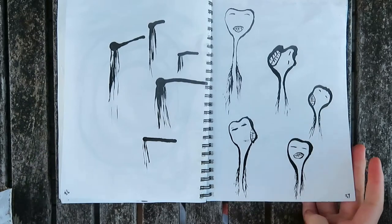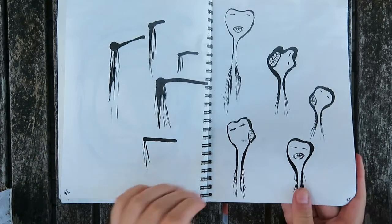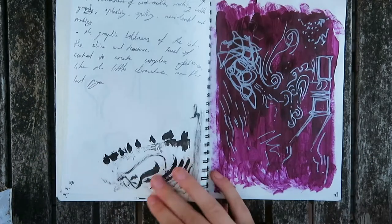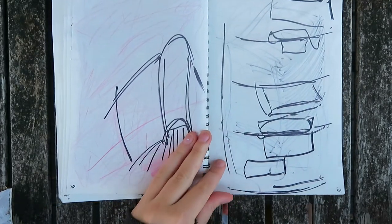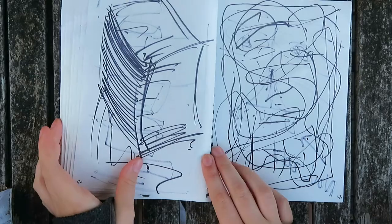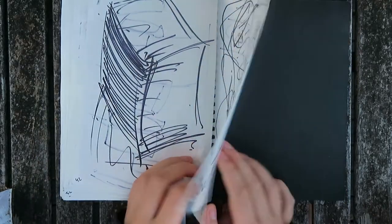And this is where the little sketchbook project finishes with these little characters, and then there's like two or three more pages left in this book, and it's mostly just scribbling experimental stuff.